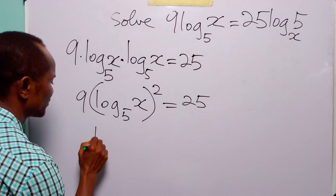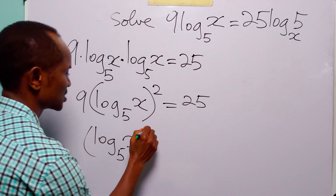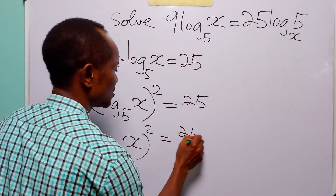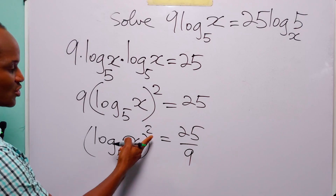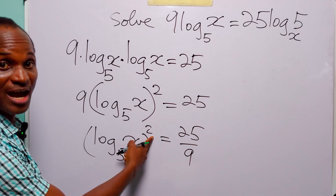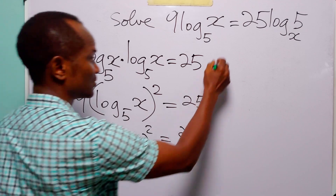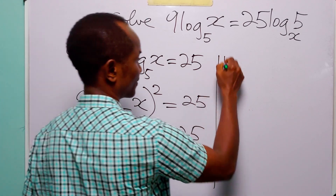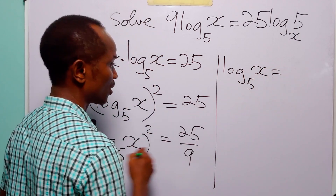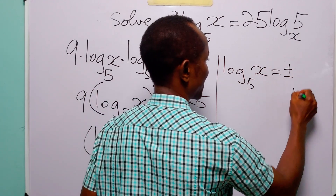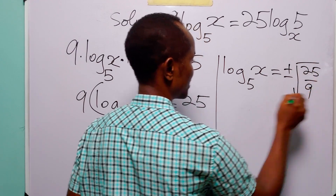When we do that, we have that (log to base 5 of x)² is equal to 25/9. To get rid of this square, we have to take the square root of both sides of the equation. When we do that, we have that log to base 5 of x is equal to ±√(25/9).